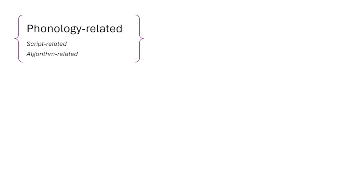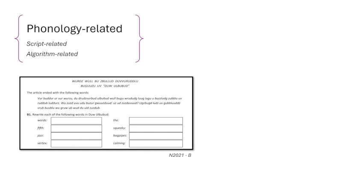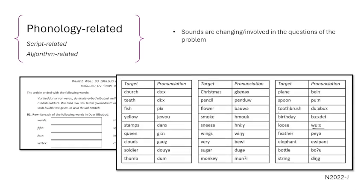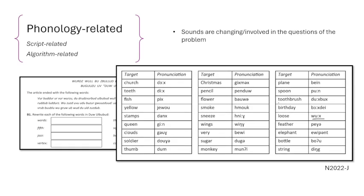Let's start with phonology-related problems. In all my practice, I've honestly seen these the least. Phonology-related problems incorporate the sounds of a particular language into the questions. For example, a problem from the 2021 NACLO competition involved switching out certain letters in English with other letters that made similar sounds. One other problem from the 2022 NACLO Invitational was about a child's pronunciation of certain English words. In fact, all three of these highlighted columns use an alphabet called the International Phonetic Alphabet, or IPA, which I can go over more in a future video.